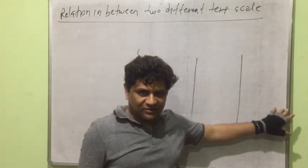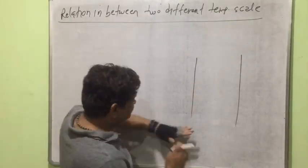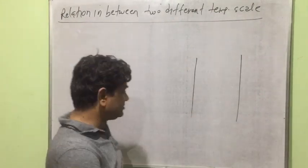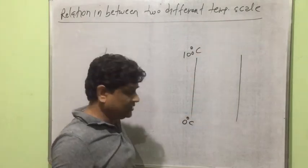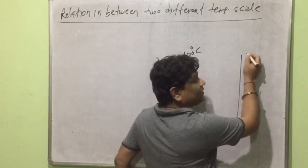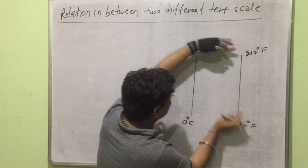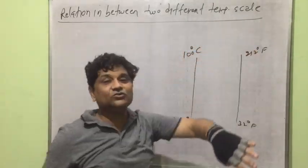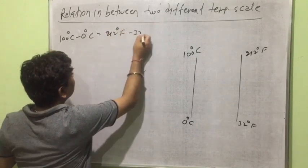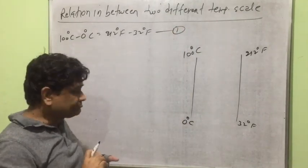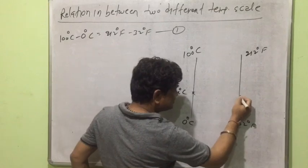To develop the master formula, consider the centigrade scale and Fahrenheit scale having the same length. The lower fixed point on the centigrade scale is 0 and the upper fixed point is 100. The lower fixed point on the Fahrenheit scale is 32°F and the upper fixed point is 212°F. Since the lengths of both scales are the same, in the same length: 100 − 0 = 212 − 32. This gives us relation number one.